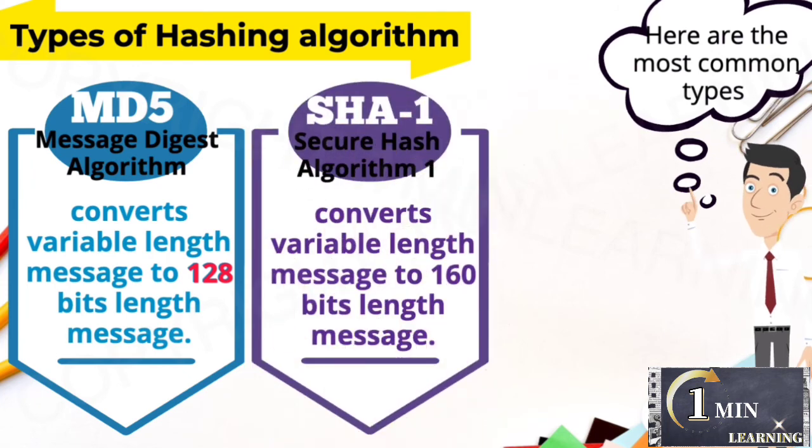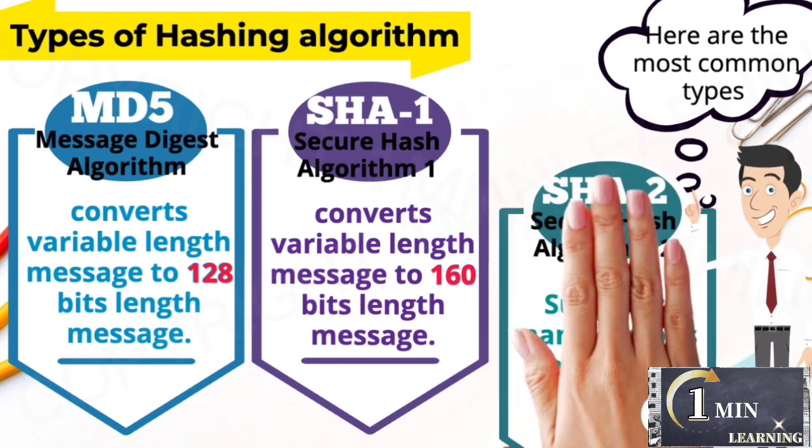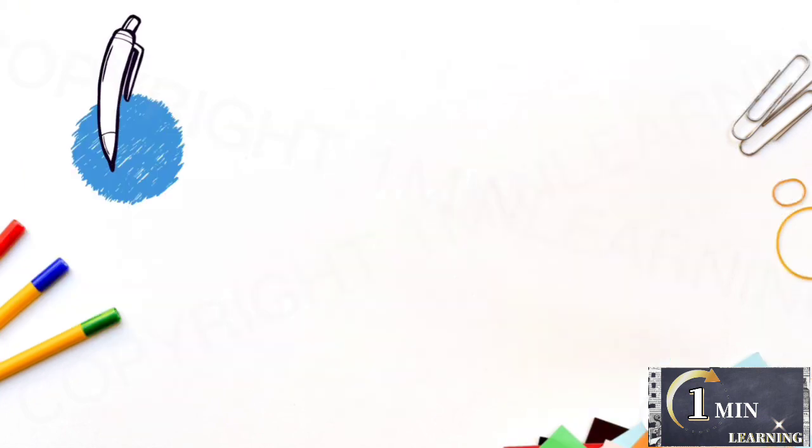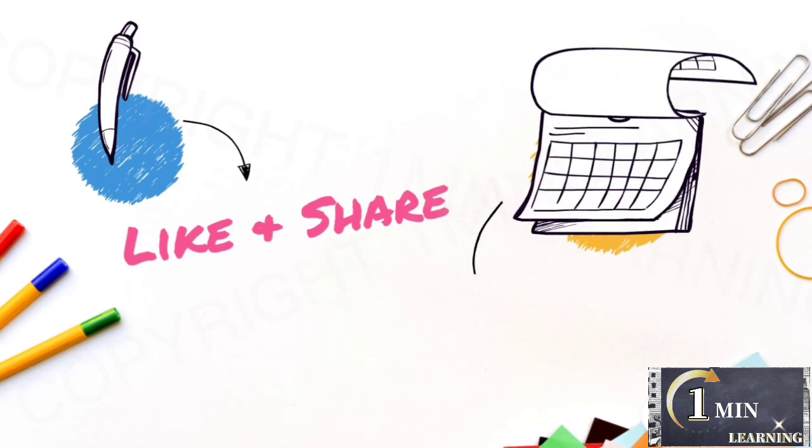SHA-1, secure hash algorithm, converts to 160 bits length messages. SHA-2 supports many options to convert. Like, share, and subscribe.